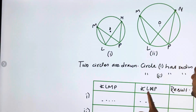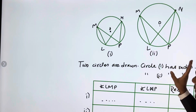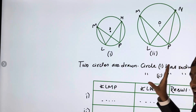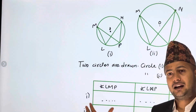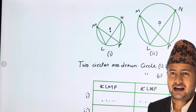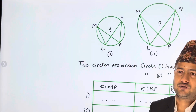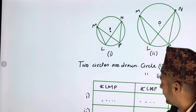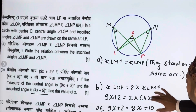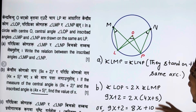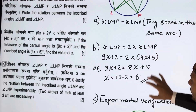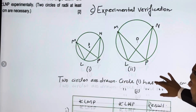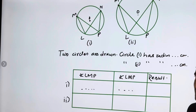This experimentally verifies that the inscribed angles are equal when standing on the same arc. I will present more when I am available. Please don't forget to engage, and I will try to present more lessons like this.